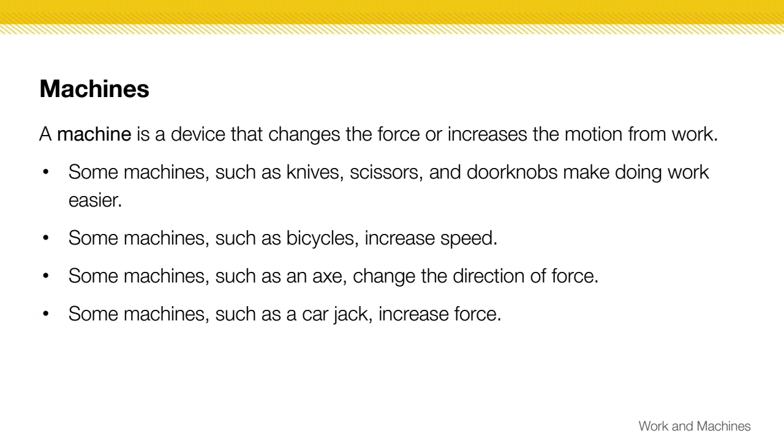First, what is a machine? A machine is a device that changes the force or increases the motion. Some things we wouldn't even consider a machine, like the blinds, are machines because they change the amount of force you need. A knife is a machine. Bicycles are machines. Here are examples of things and how they change the motion or change the force.